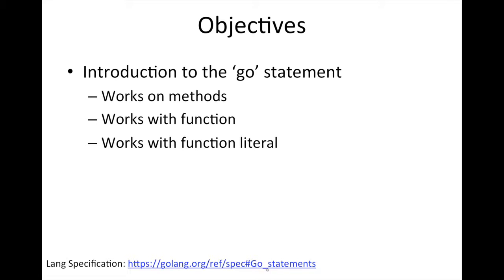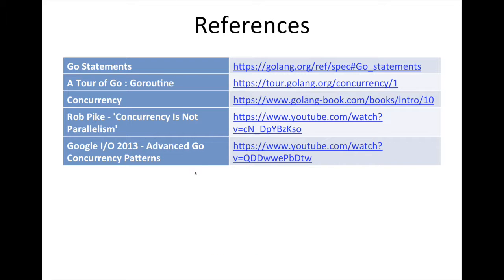I have linked to the section in the specification that talks about Go statements, so definitely check that out. I also have some other resources: there's a tour of Go, and Effective Go, which covers concurrency and how Go routines and channels fit into that concurrency model. There's also reading material in the Golang book. I definitely advise you to watch two videos: 'Why concurrency is not parallelism' and 'Advanced patterns in Go concurrency.' We're going to touch on some of those patterns, but definitely watch those two videos.